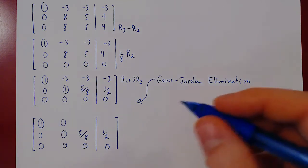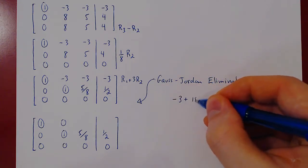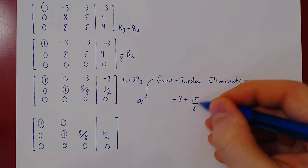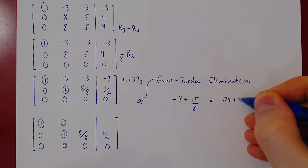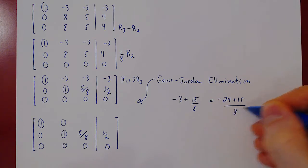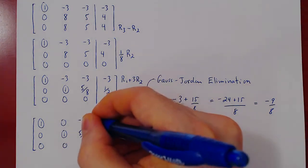Oh sorry, I'll do it here. So we have negative 3 plus 15 over 8. I went backwards about this. So we get negative 24 plus 15 over 8, which is negative 9 over 8.